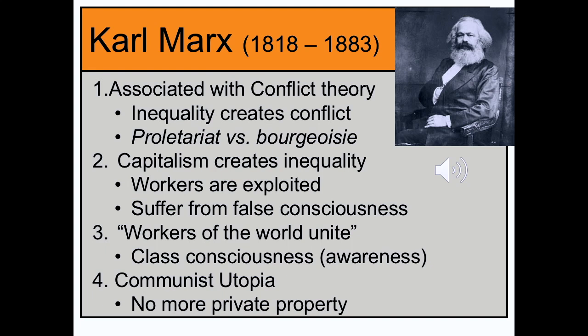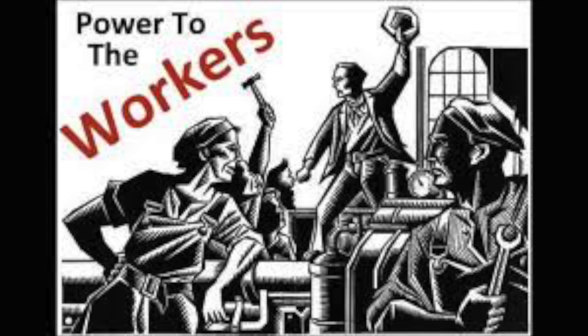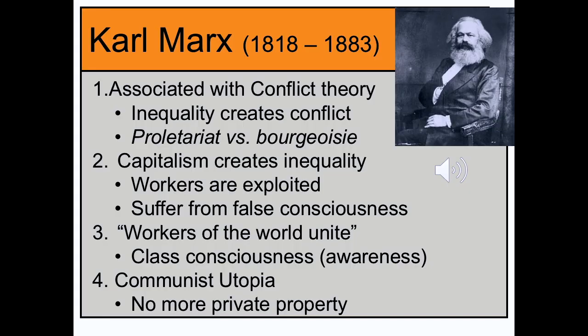Next we have Karl Marx, who was writing in the late 1800s as well. He's associated with conflict theory. Although most people associate Karl Marx with communism — and that's a failed economic system — what's more important for sociologists is his social theory. He looks at conflict caused by inequality. When different groups have access to privilege and wealth and others don't, that inequality is going to cause conflict. For Marx, there were two major groups in conflict: the proletariat and the bourgeoisie. The proletariat are the workers, and the bourgeoisie were the capitalists who owned the factories.